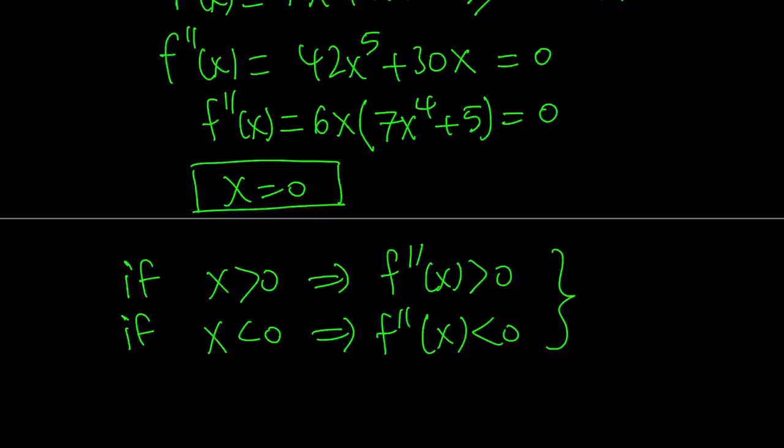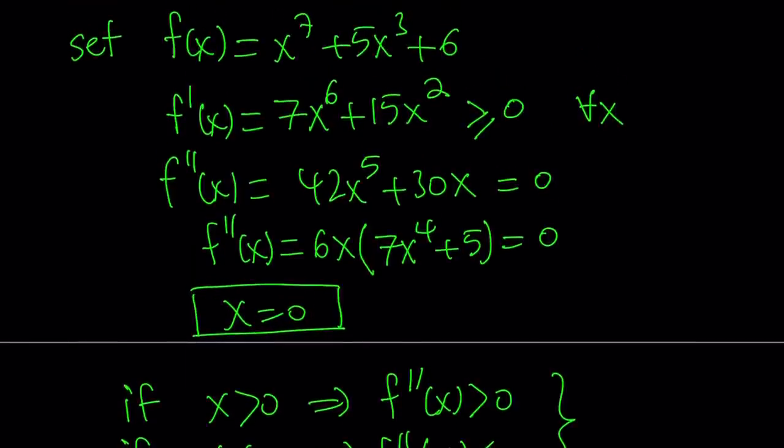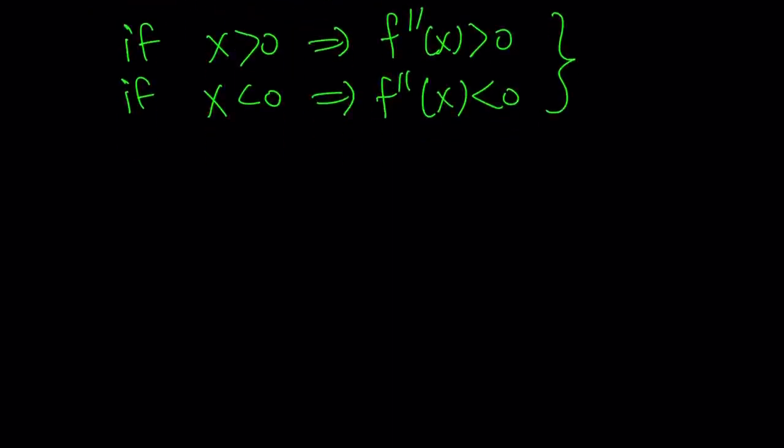So we don't have any maxima or minima here, but notice that if you exclude the x equals 0 value here, you're going to notice that f prime is always positive, therefore f(x) is always increasing.